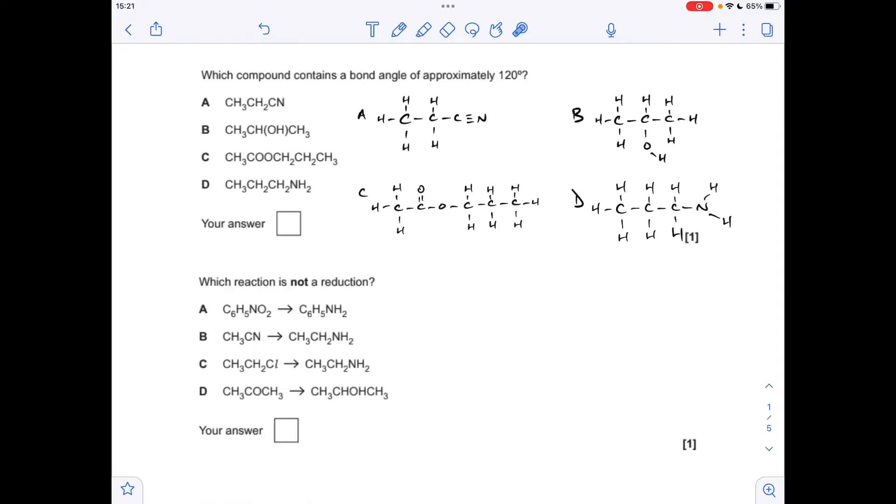Moving on to the next question. I've drawn up all the displayed formulae for the molecules. So let's just work through each one and see which one's got the bond angle of 120 degrees. So A, we've got 109.5 around these carbons here and then this nitrile group, it's 180. So it's not A.